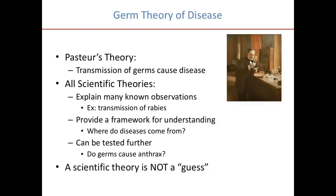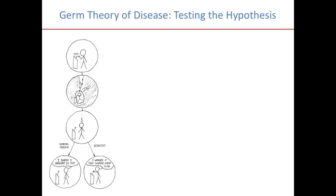A few things on scientific theories: all scientific theories explain many known observations. An example is that the germ theory of disease explains the transmission of rabies — it provides a framework for understanding where diseases come from and can be tested further, such as: do germs cause anthrax? One thing to note is that a scientific theory is not a guess. And if I start hearing you talk about scientific theories as a guess, my daughter Nora will be very angry with you.